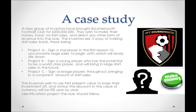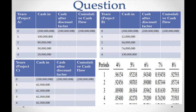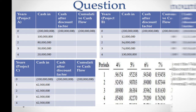Now we move on to our case study. A new group of investors have bought Bournemouth Football Club for £200 million and wish to make their money back via shirt sales. The investors see three ways of generating shirt sales: Project A — sign a star player in the first season to accumulate sales initially, which will then slowly die down; Project B — sign a young player with world-class potential who will bring in large shirt sales in the future; Project C — sign average players throughout, bringing in a consistent amount of shirt sales. The investors wish to use net present value with a discount rate of 8% per year. Please identify which project the club should follow.